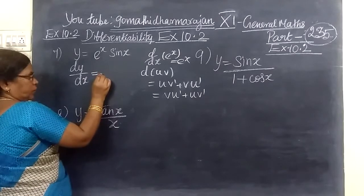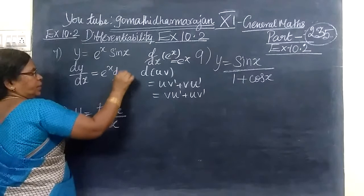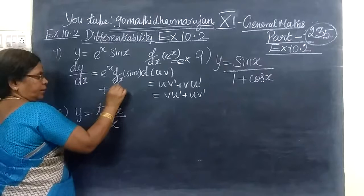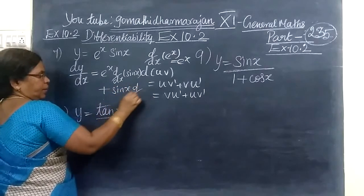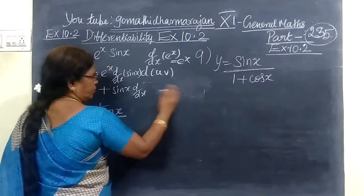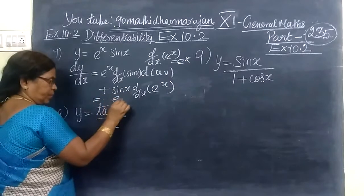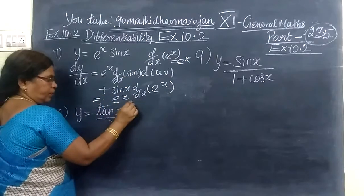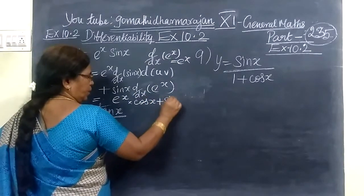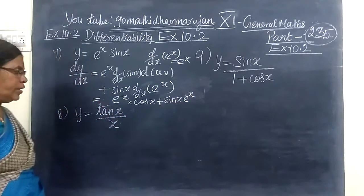So this is equal to e power x times d by dx of sin x, plus sin x times d by dx of e power x. We write e power x as it is, and the differentiation of sin x is cos x. Then sin x you write as it is, and the differentiation of e power x is e power x.